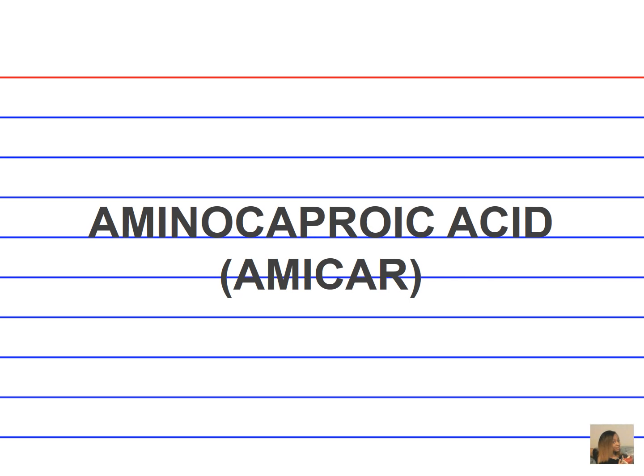Aminocaproic acid, Amicar. What is the drug classification for aminocaproic acid? It's a hemostatic — meaning it allows one to clot properly. How should it be administered? Intravenously. What lab factors need to be monitored? PT, INR, APTT, platelets, and clotting factors. What are the indications? Aplastic anemia and post-open cardiac surgery.